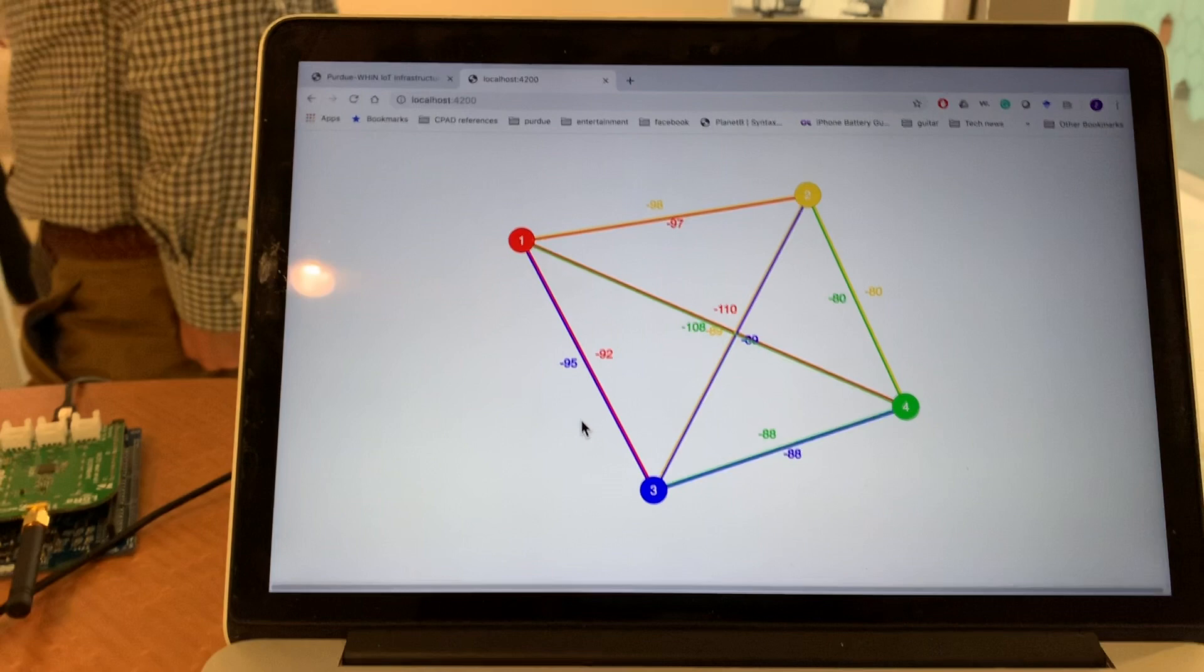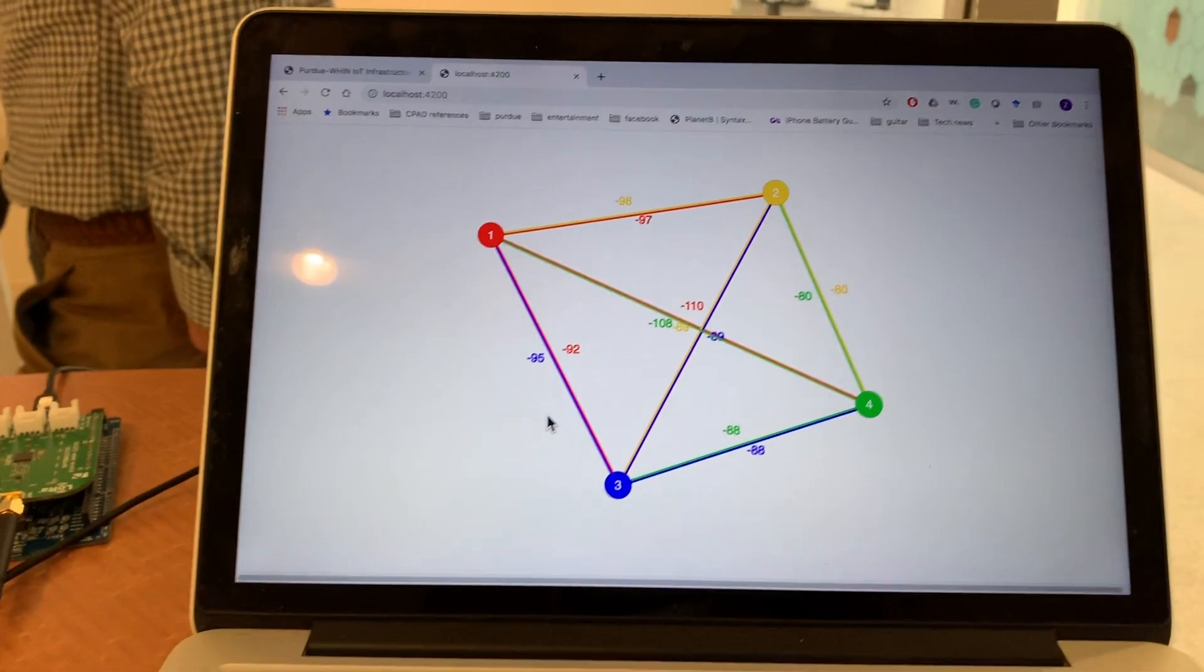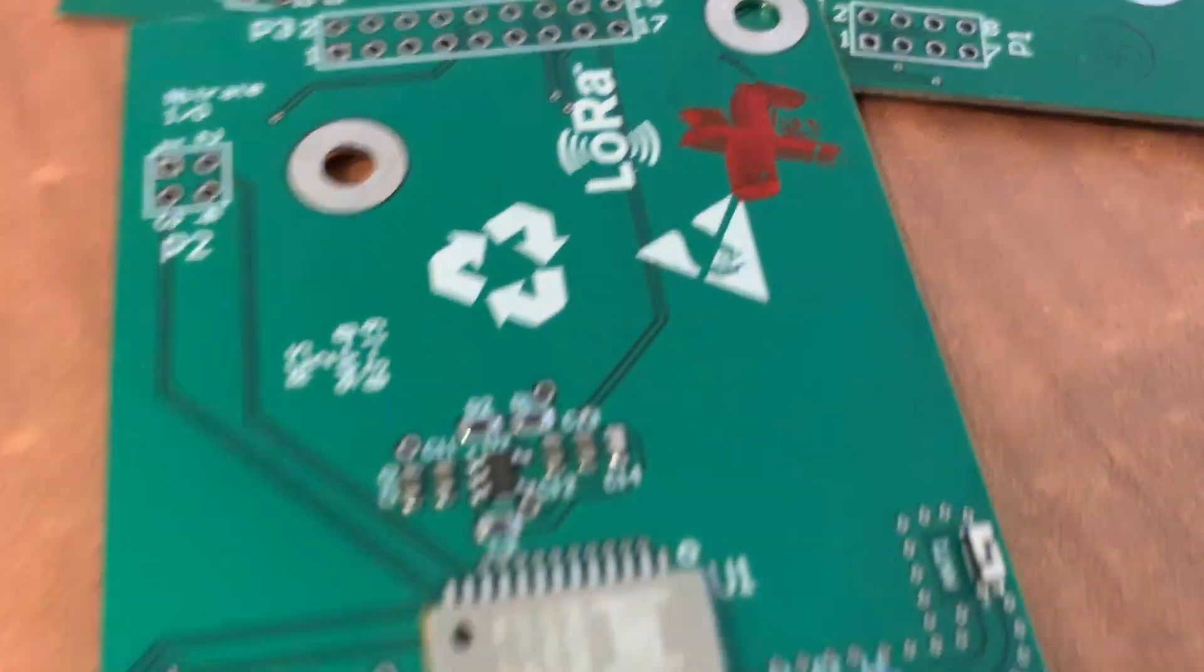It is also possible in the network that some nodes fail. Then, the failed nodes should be identified and removed from the network. To show this, we try to unplug the battery from node 4.